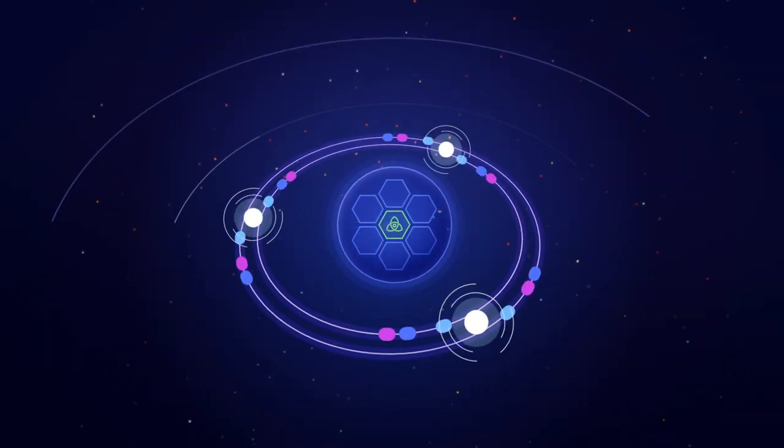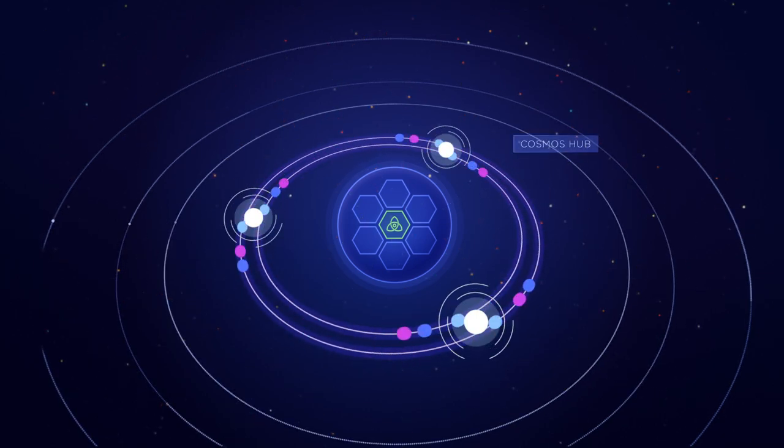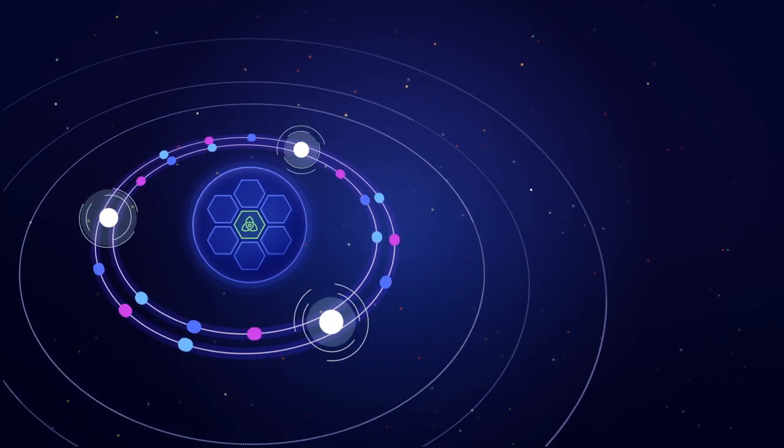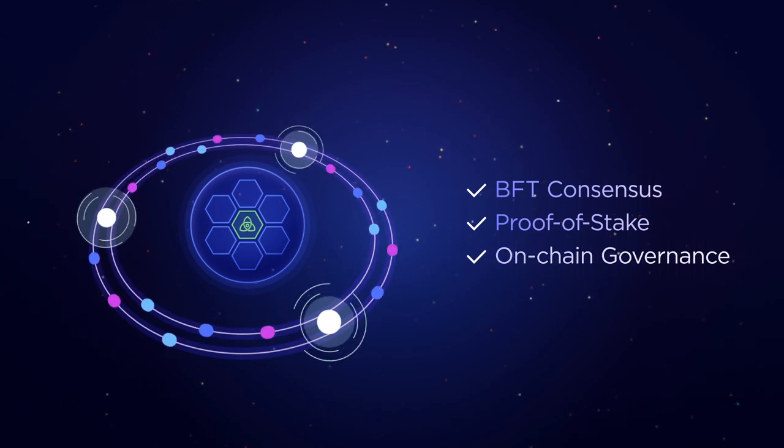An example blockchain built with this SDK is the Cosmos Hub. The Cosmos Hub features the latest generation of technology like BFT consensus, proof-of-stake, and on-chain governance.